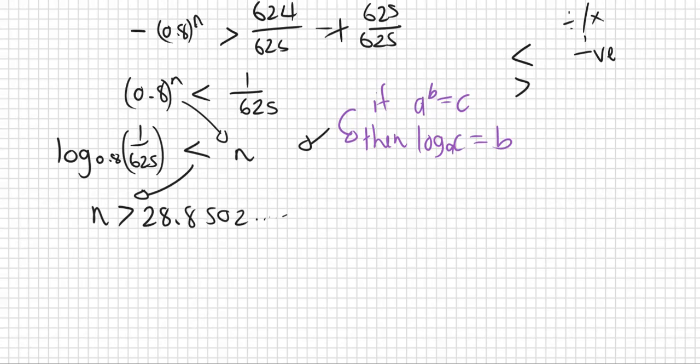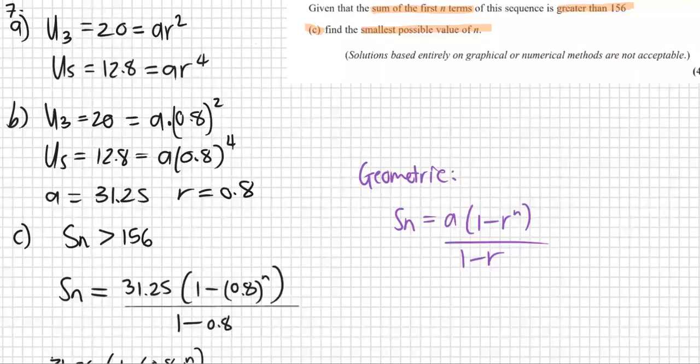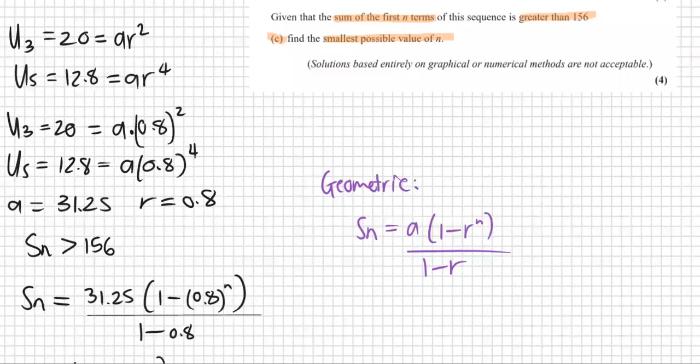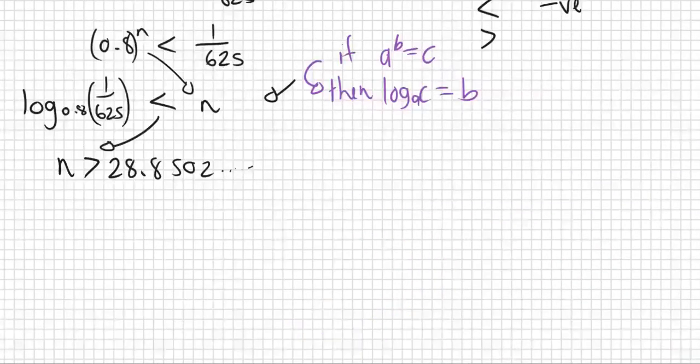Go back to the question. They asked to find the smallest possible value of n. The smallest possible value of n, if n is larger than 28.85, is 29.